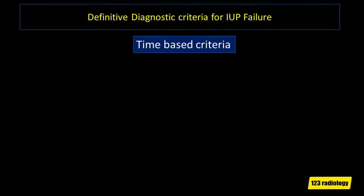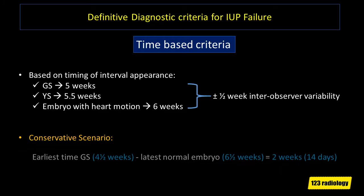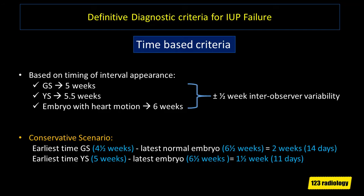Time-based criteria for pregnancy failure are needed because discriminatory mean sac diameter or crown rump length may never be achieved. Based on timing of interval appearance: the gestational sac appears at 5 weeks, the yolk sac at 5½ weeks, and the embryo with heart motion at 6 weeks, with half-week inter-observer variability. In the conservative scenario: the earliest you see a gestational sac is 4½ weeks, minus the latest normal embryo at 6½ weeks — a difference of 2 weeks or 14 days. Similarly, the earliest yolk sac at 5 weeks minus the latest embryo at 6½ weeks gives 1½ weeks, or 11 days.